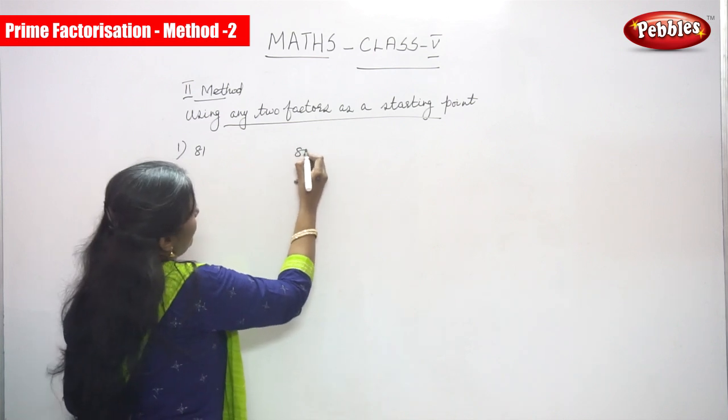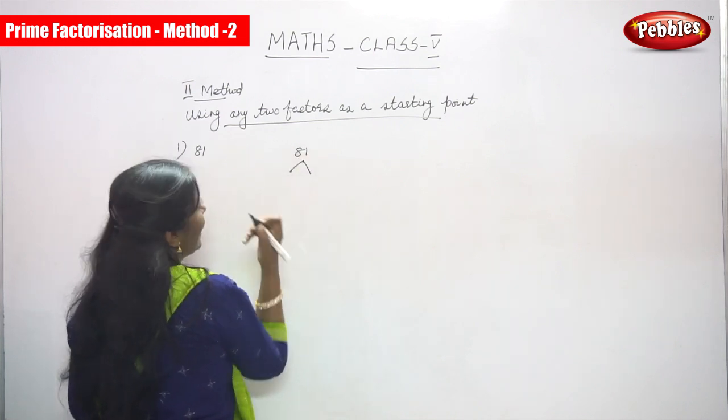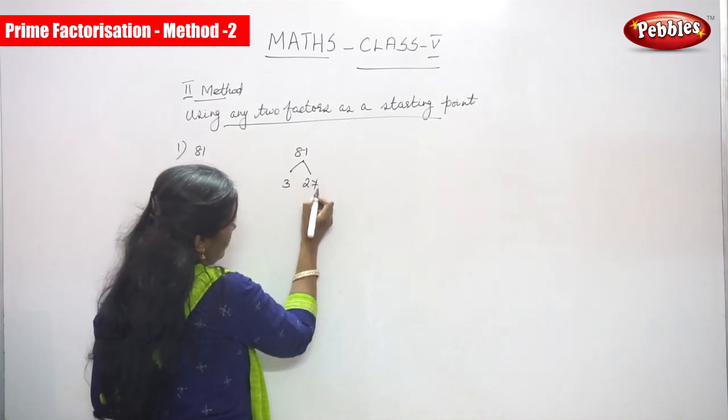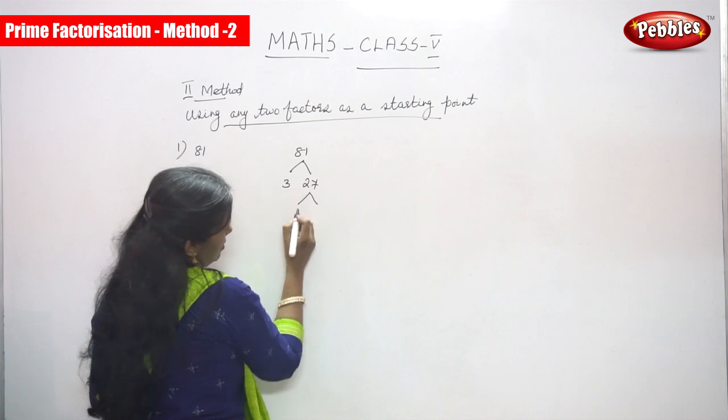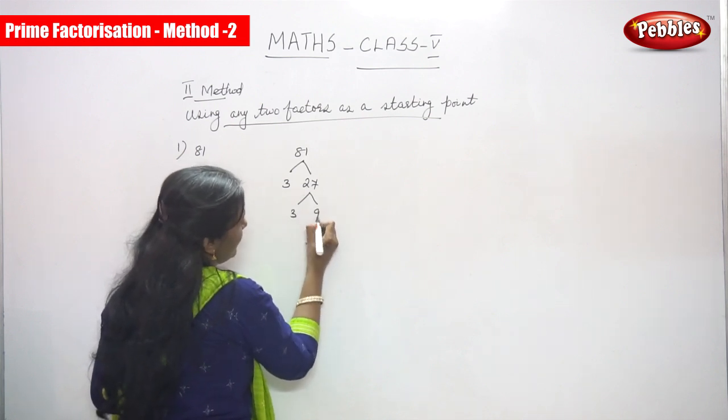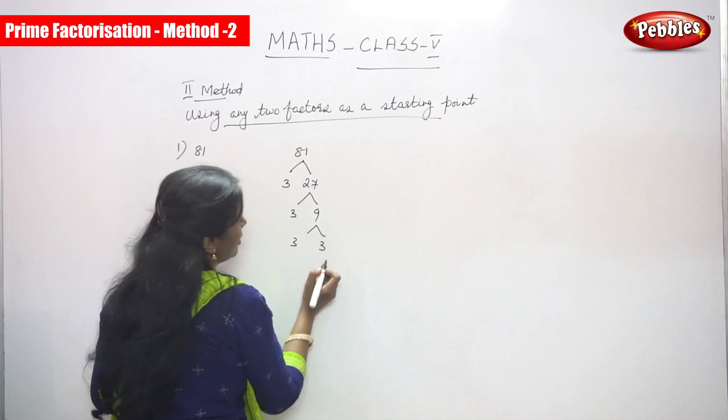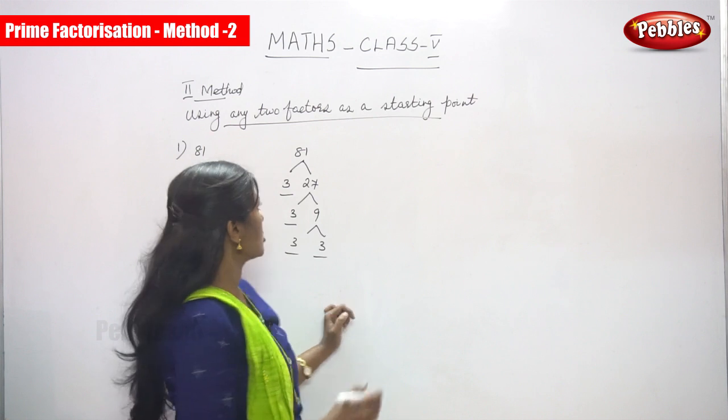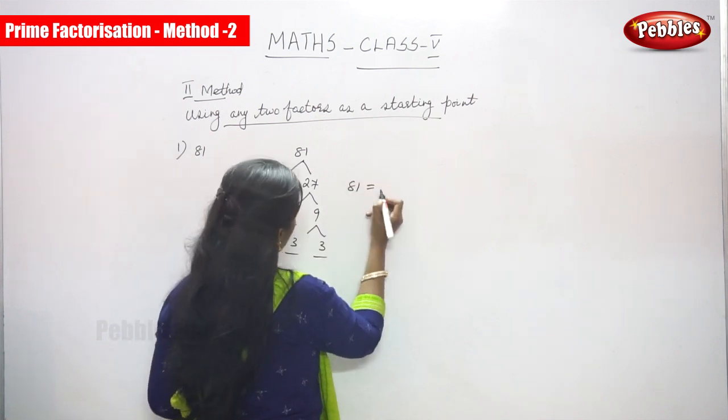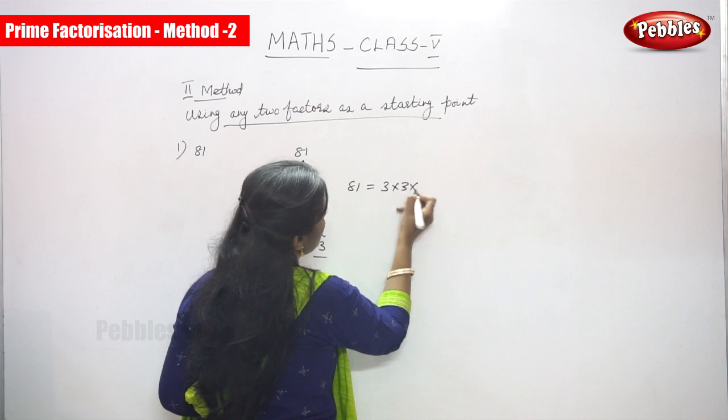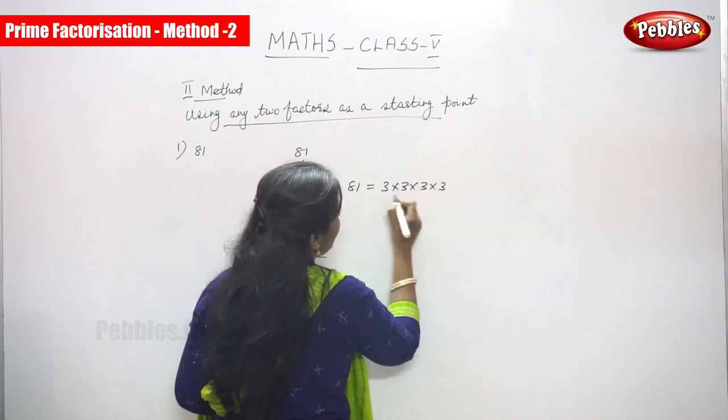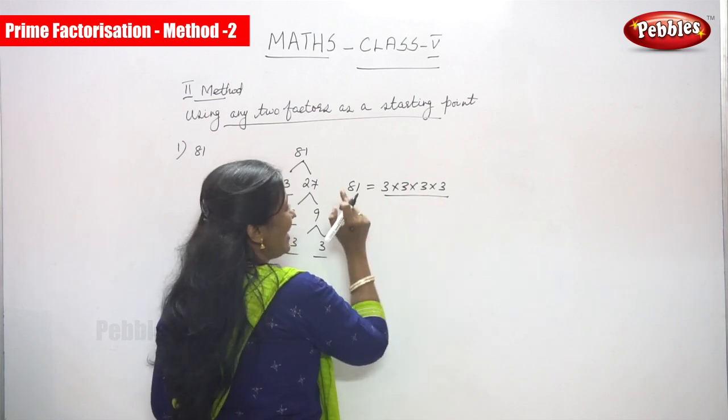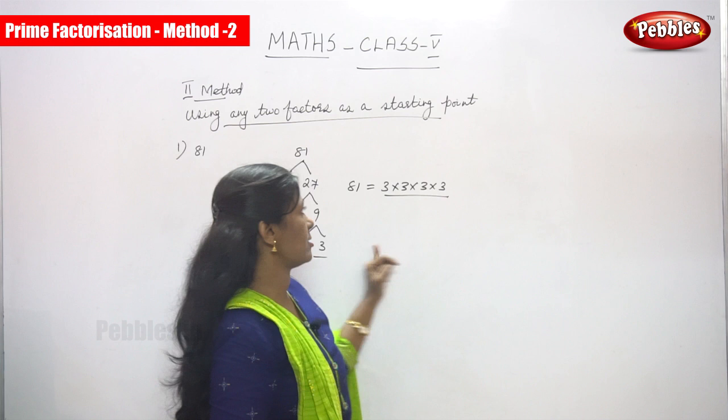So, we are going to take these factors. First we are going to take up any two factors, so I'm going to take 3 and 27. Next I'm going to take 3 and 9, again I'm going to take 3 and 3. So 81, what is the factor of 81? 3 into 3 into 3 into 3 these are the factors. So 3 into 3 is 9, 9 into 3 is 27, 27 into 3 is 81. This is the factor of 81.